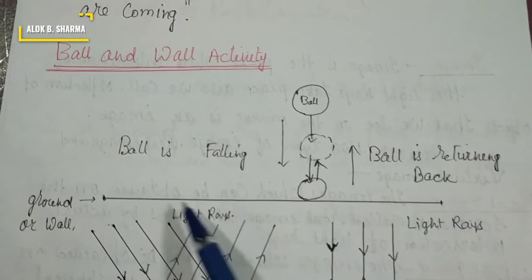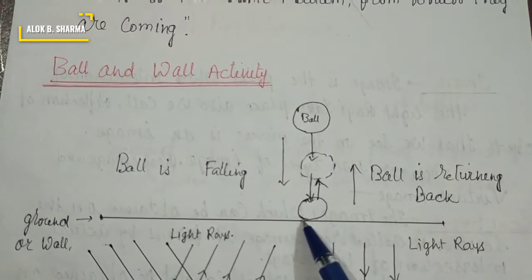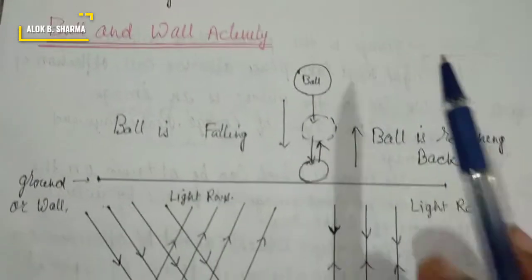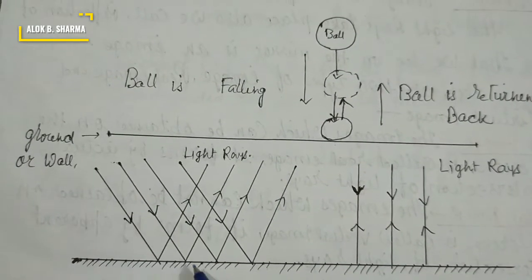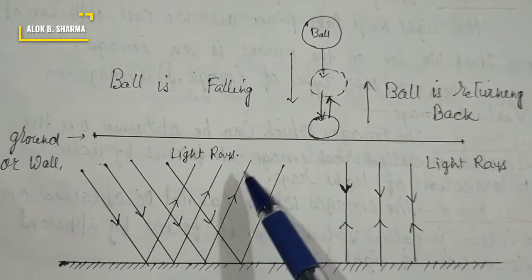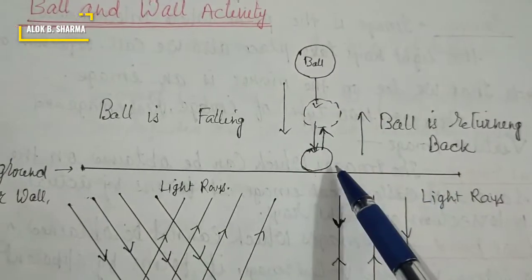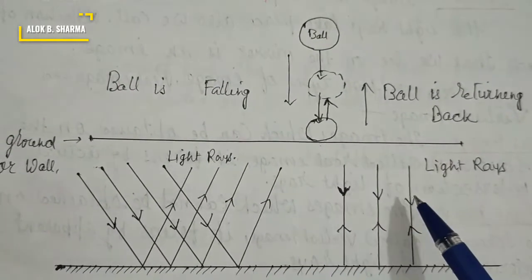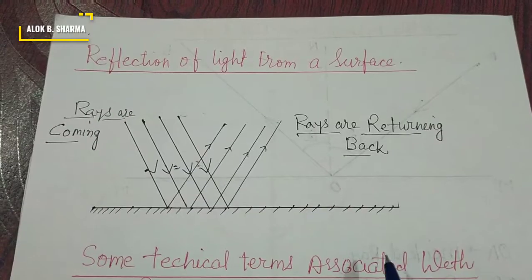Consider this diagram: the ground is shown, and a rubber ball is falling from above, hitting the ground and returning back. A similar case happens with light rays. This is a smooth surface like a mirror. When light rays fall on the smooth surface at an angle, they reflect at an angle. When they come normally, they reflect normally. This bouncing back action of light is called reflection of light.